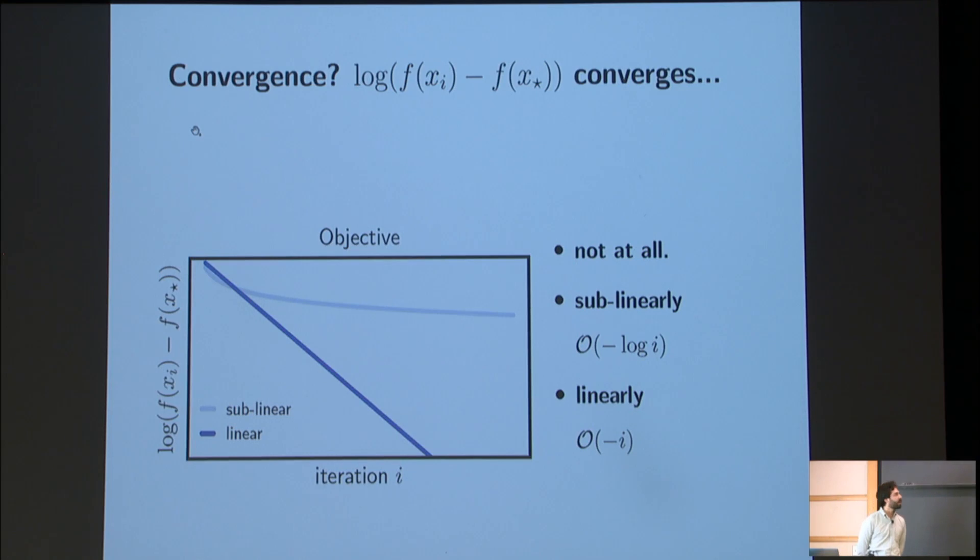Right, so then the question is, OK, well, does that system converge? And if so, what kind of convergence can we expect? So here I'm plotting as a function of the iteration counter i, the logarithm of the function's value at an iterate x sub i as a gap to the minimizing argument f of x star. So we could distinguish between three kinds of behavior at least on this kind of plot. Well, first of all, the system might not converge at all. That would be sad. If it does converge, it might converge what we would call sublinearly. So that would mean that we're converging like a logarithm to minus infinity, some constant times a logarithm. Or it might be converging linearly like minus i to minus infinity.